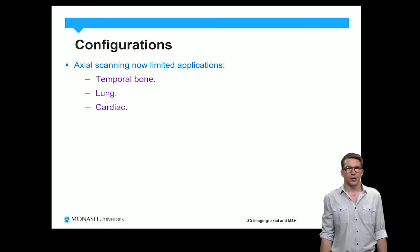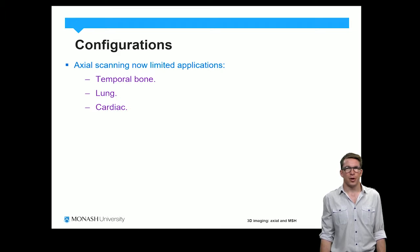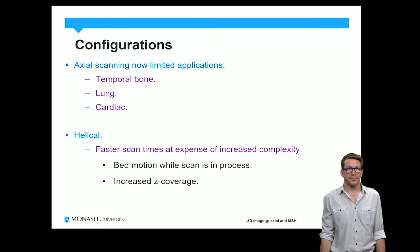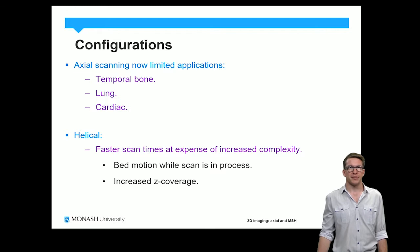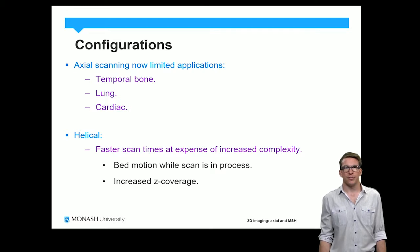Axial scanning is used sometimes in limited applications but has largely been superseded by helical scanning. Some of the axial applications include scanning of the temporal bones, the lungs, and also cardiac gated CT. Helical scanning has significant benefits in terms of being faster and increased flexibility, but there is a level of increased complexity because we have to do some re-binning of the data before we can do the reconstruction. Helical scanning relies on the fact that the bed moves whilst the scan is in progress.